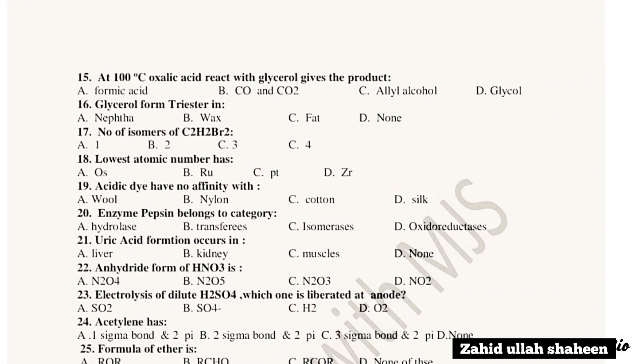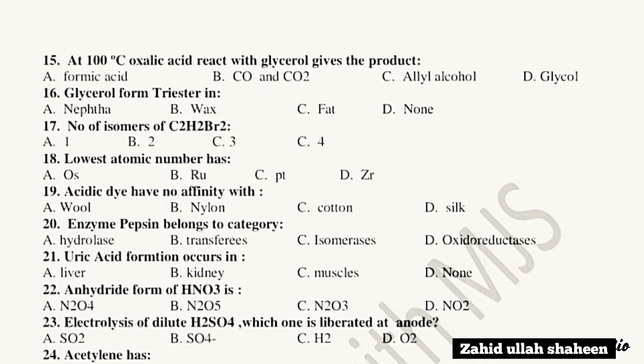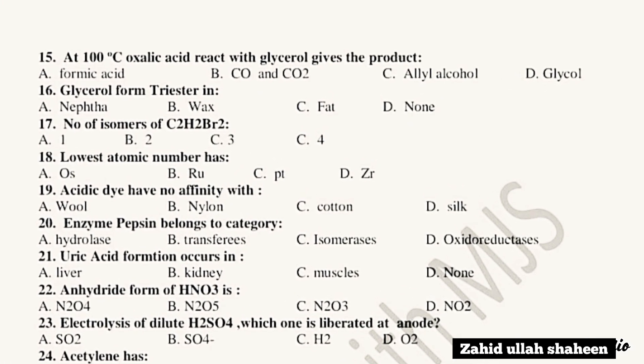Question 15: The glycerol reaction occurs at 100 degrees centigrade. Question 16: Glycerol is formed from triester — the answer is glycerol and triester, take option.